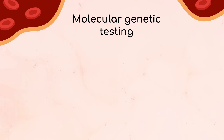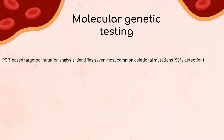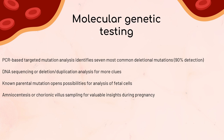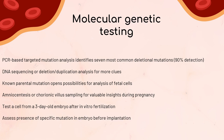For the HbA1 and HbA2 genes, PCR-based targeted mutation analysis aims to identify the seven most common deletional mutations, detecting about 90% of all alleles. DNA sequencing or deletion/duplication analysis provides additional resolution. When the specific mutation carried by the parents is known, fetal cells obtained through amniocentesis or chorionic villus sampling can be examined. Alternatively, pre-implantation genetic diagnosis lets us test a cell from a three-day-old embryo after in vitro fertilization, allowing assessment of the specific mutation in the embryo before implantation.